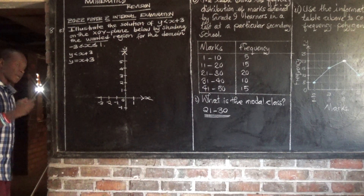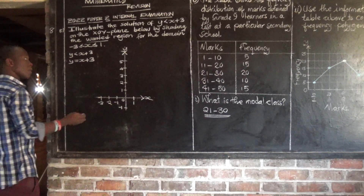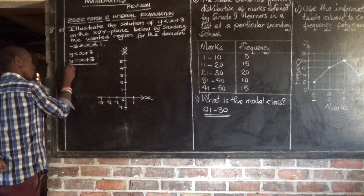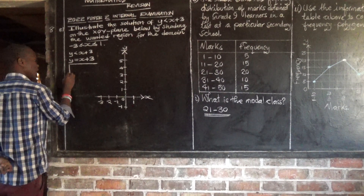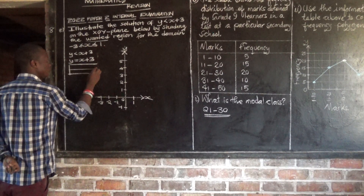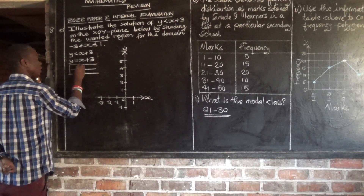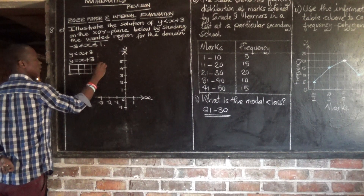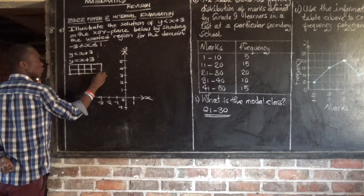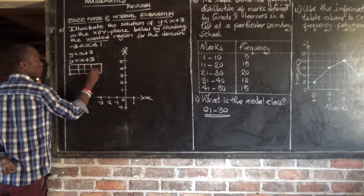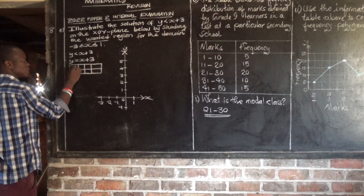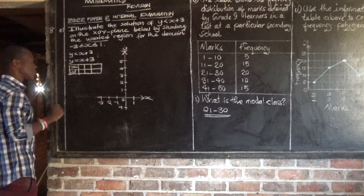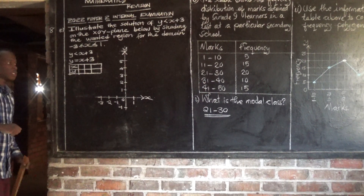Step number 2, we are going to come up with the table of values. In this table of values, we have x values and y values. Now we start making assumptions.